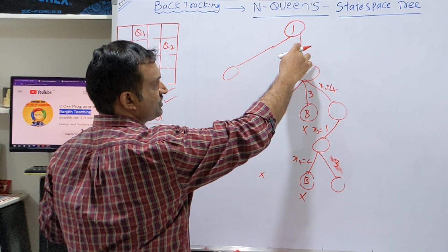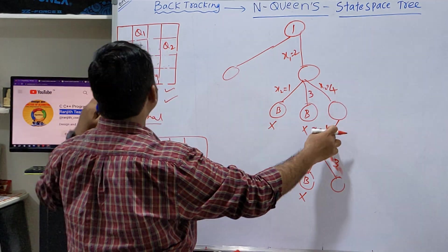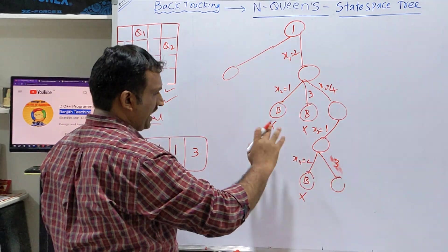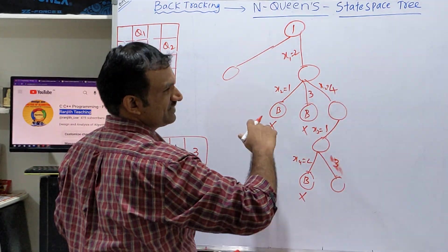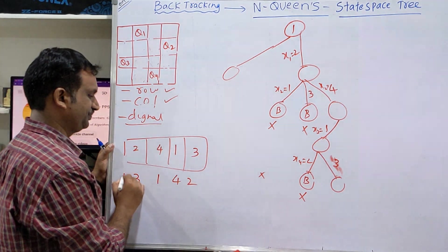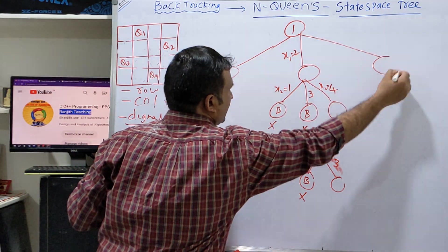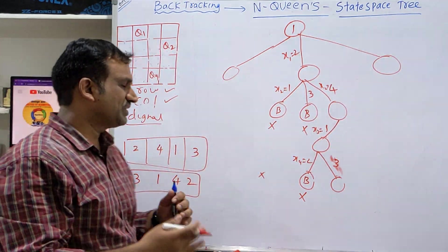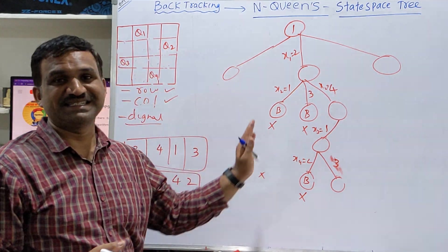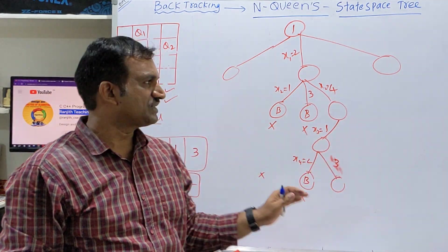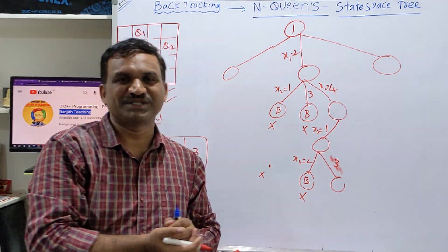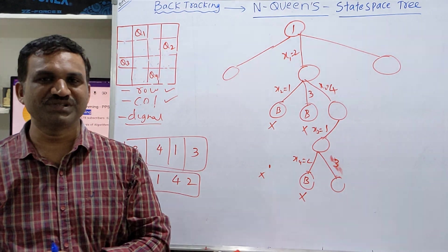So first queen in the second position, second queen in the fourth position, third queen in the first position, fourth queen in the third position. This is one solution. And one more is a mirror image of this, which is nothing but 3, 1, 4, 2 — which will appear in the next case. So this is about how to draw the state space tree for N-Queens. For all possibilities you get 16 nodes each, whereas we demonstrated how the backtracking will happen. That is the state space tree for N-Queens backtracking. Thank you, see you in the next session.